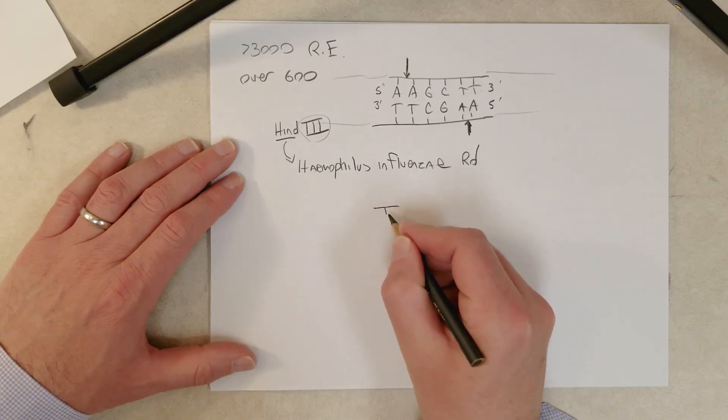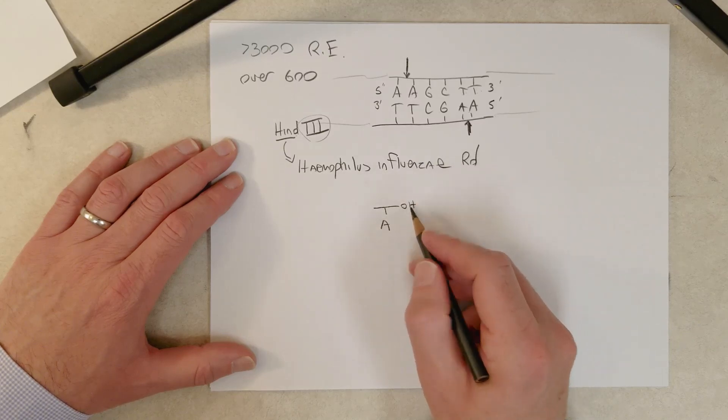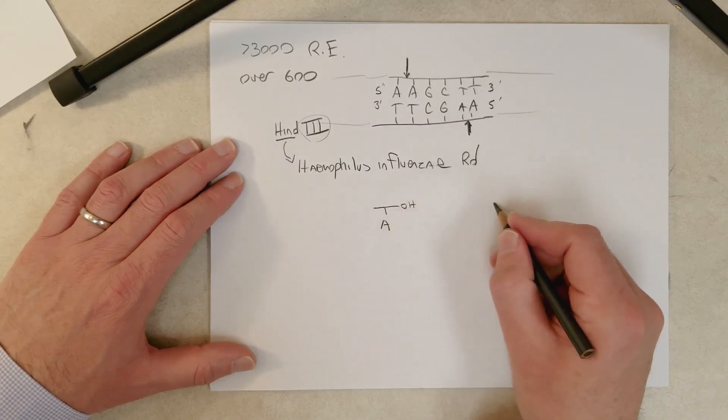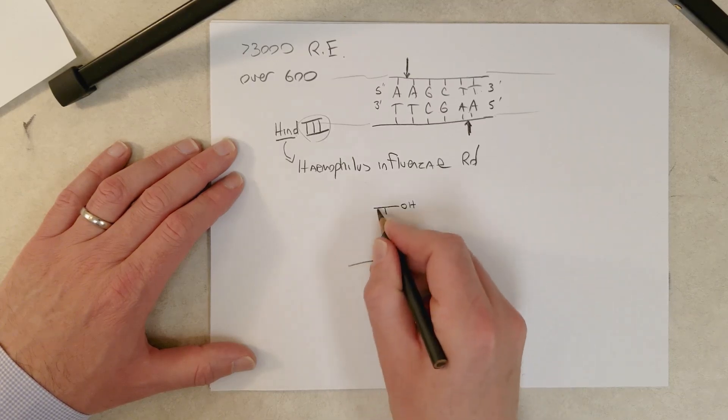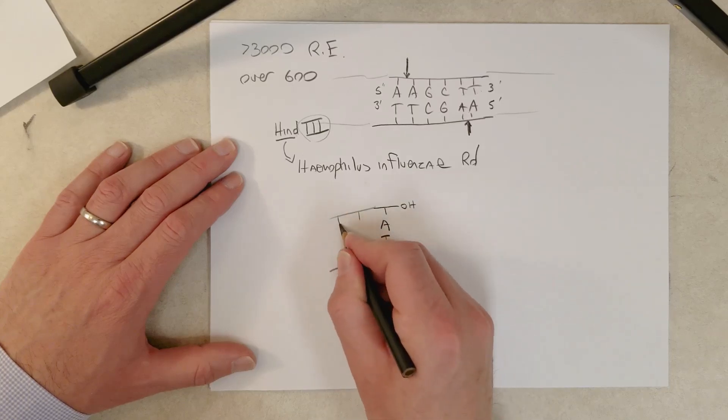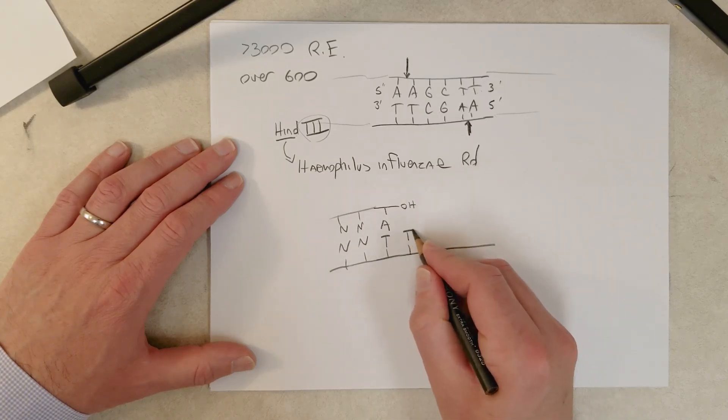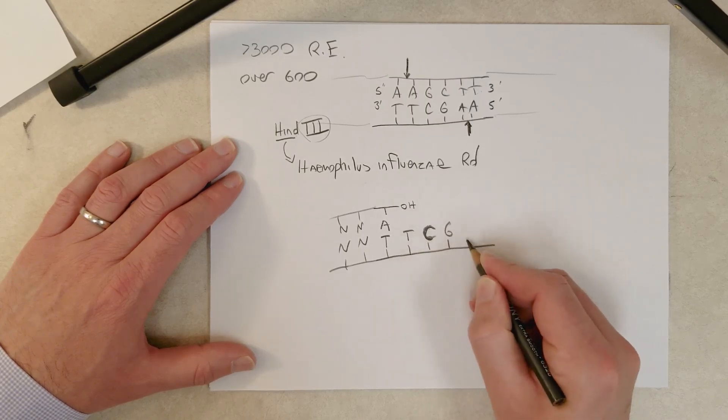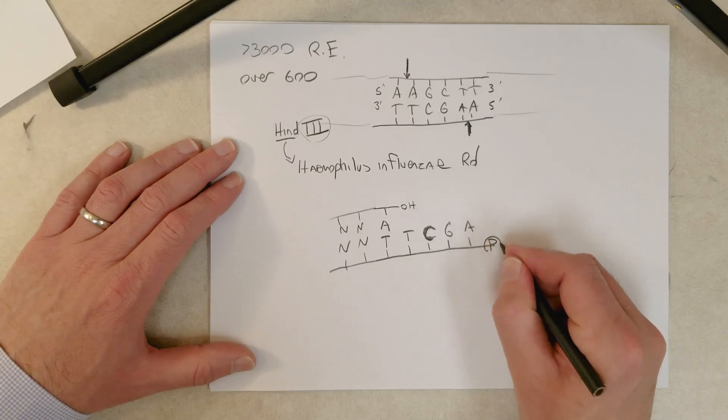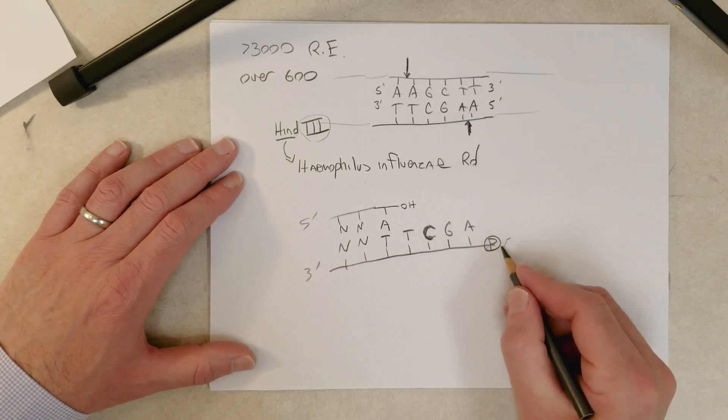And these ends are going to be called sticky ends. So let me diagram that down here. So we're going to end up with an A here. It's a three prime hydroxyl there. And down here we'll have the T. And let's say the DNA goes on this way. So that's the five prime end. This is the three prime.